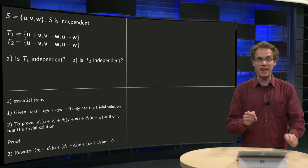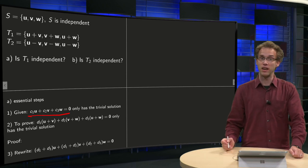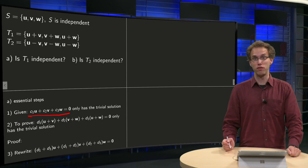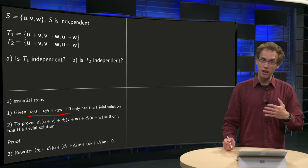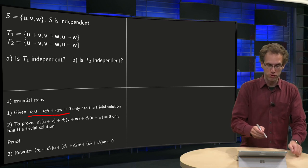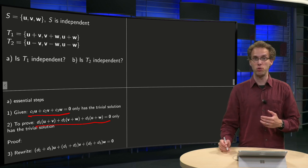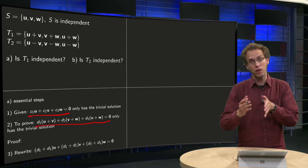First of all it's given that S is independent, that this equation here only has a trivial solution. Then what we have to prove is that similarly for t1 this equation over here only has a trivial solution. If we can prove that then we know that t1 is independent.